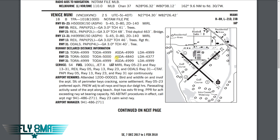ASDA is your accelerate-stop distance available — the distance available to accelerate and then stop the airplane. It's the length of the takeoff run available plus the length of any stopway if provided; there's not really much stopway provided here. LDA is landing distance available — the length of runway declared available and suitable for the ground run of a landing airplane. With a displaced threshold on runway 23, you have 4,377 feet available.